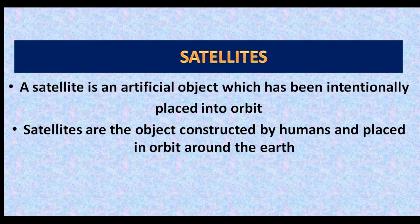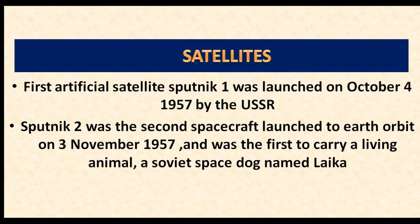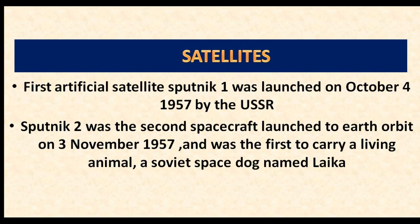A satellite is an artificial object which has been intentionally placed into orbit — objects constructed by humans and placed in orbit around the Earth. The first artificial satellite, Sputnik 1, was launched on October 4, 1957 by the USSR. Sputnik 2 was launched on November 3, 1957 and was the first to carry a living animal, a Soviet space dog named Laika.